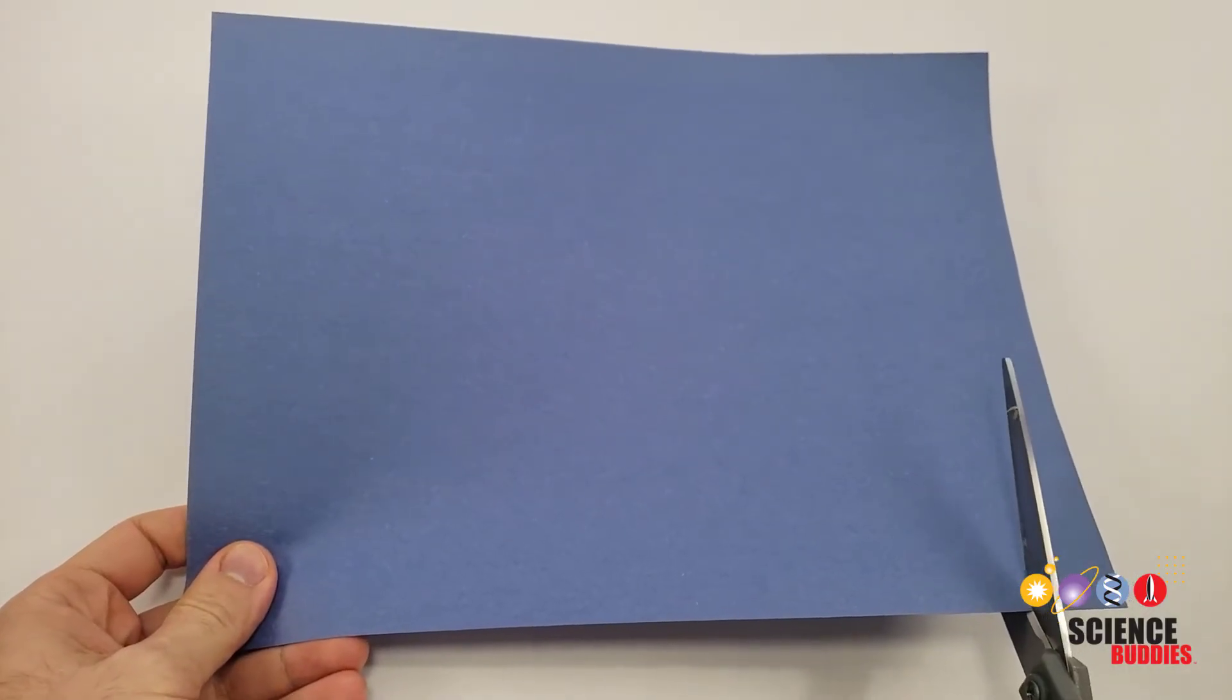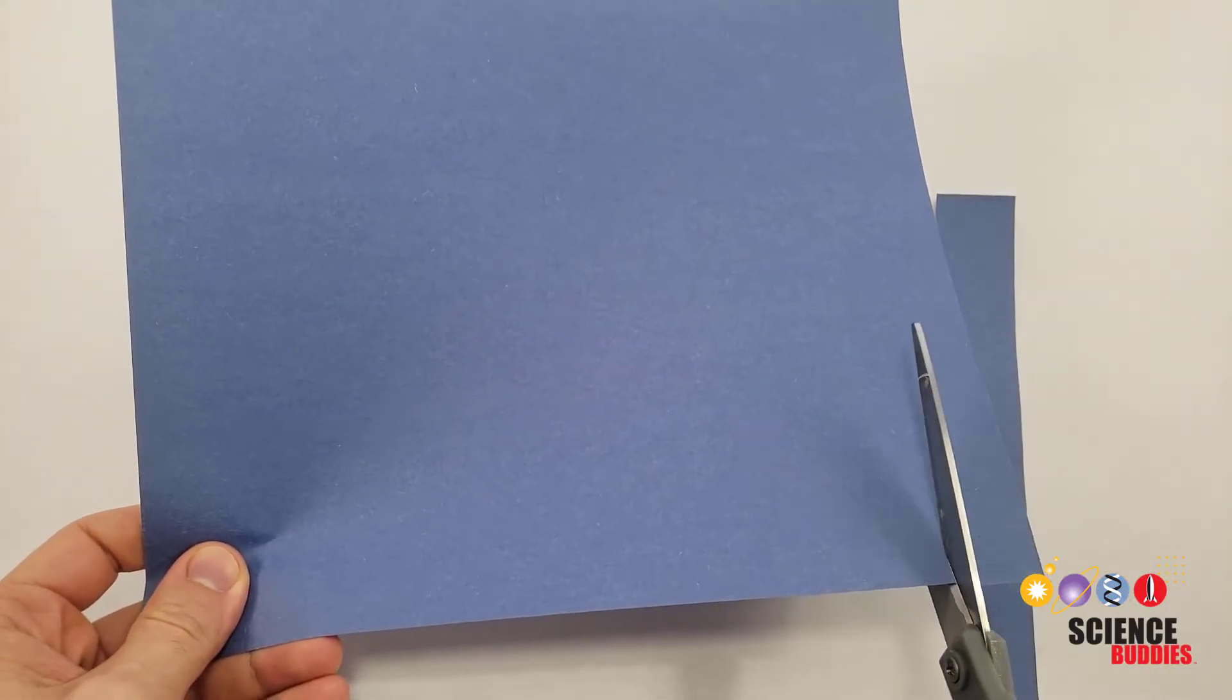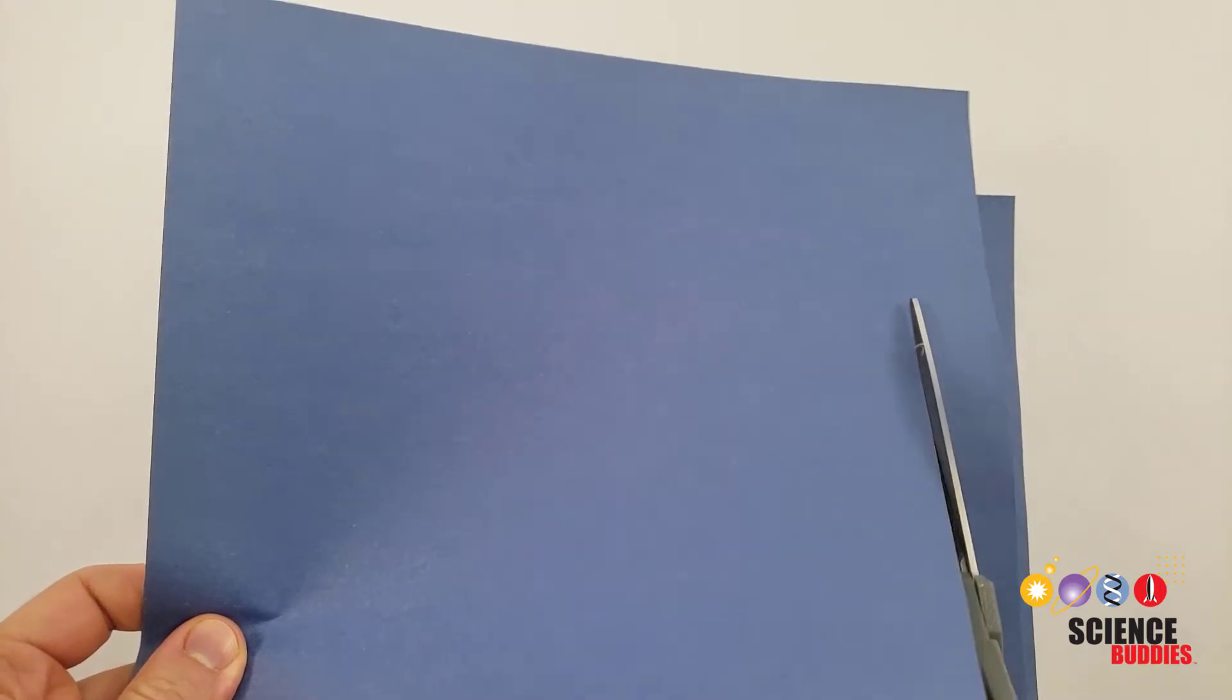If you need some help getting started, here's how you can build a basic lantern. Start with a single piece of construction paper. Cut two strips off the end.